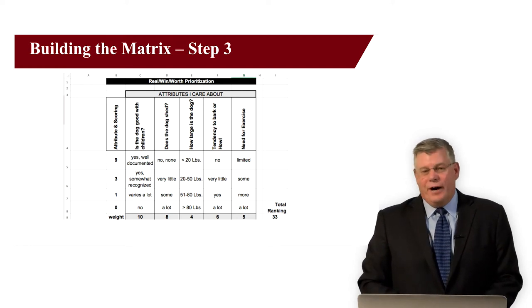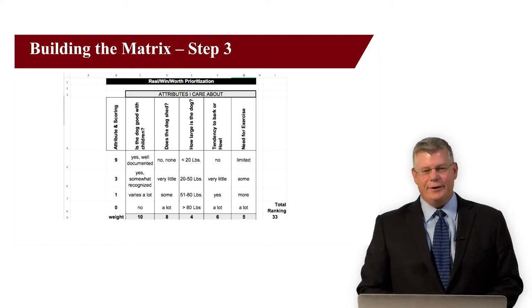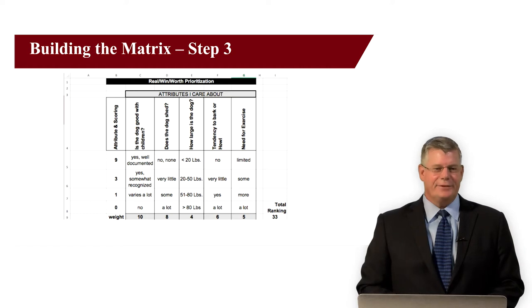Because I didn't want my wife to move out, we rated shedding an 8. Perhaps it should have been higher. The other attributes were a little less important, so they scored 4, 6, and 5, respectively.